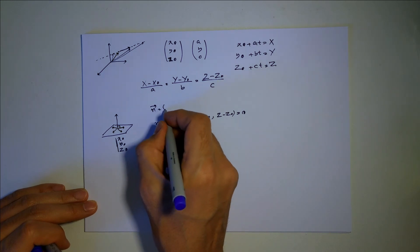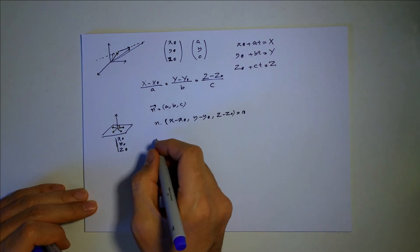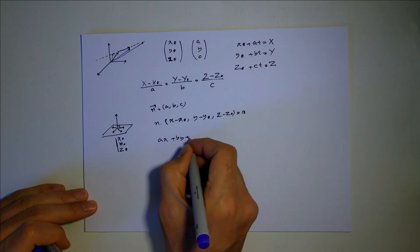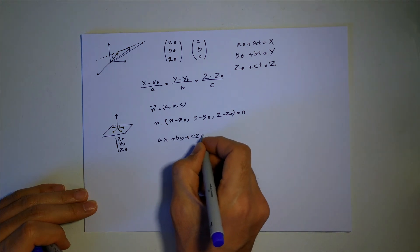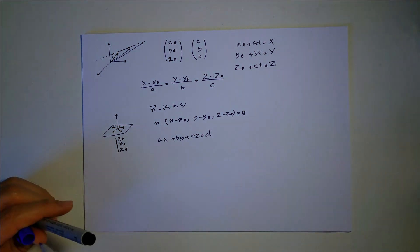And the normal is basically a, b, c. So this will give me a times x plus b times y plus c times z equal to d. So that's the equation of a plane in 3D.